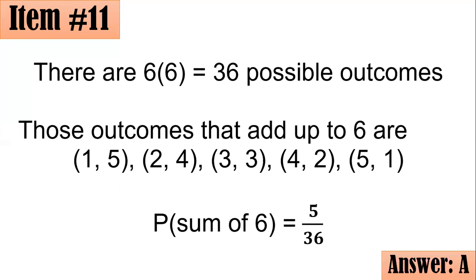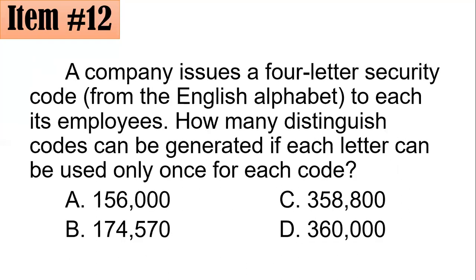Number 12. A company issues a 4-letter security code from the English alphabet to each of its employees. How many distinguishable codes can be generated if each letter can be used only once? We have to remember that the English alphabet from A, B, C, D all the way until Z has 26 letters.